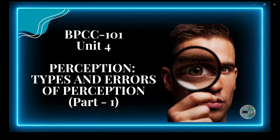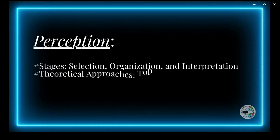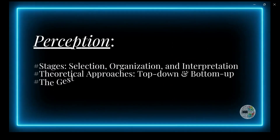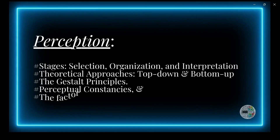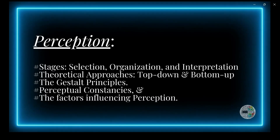Today we start with Chapter 4 from BPCC 101: Perception, Types and Errors of Perception. In the last chapter, we learnt about perception, its stages — selection, organization and interpretation — and the theoretical approaches: top-down and bottom-up. We also covered the Gestalt Principles, Perceptual Constancies, and finally the factors influencing perception.